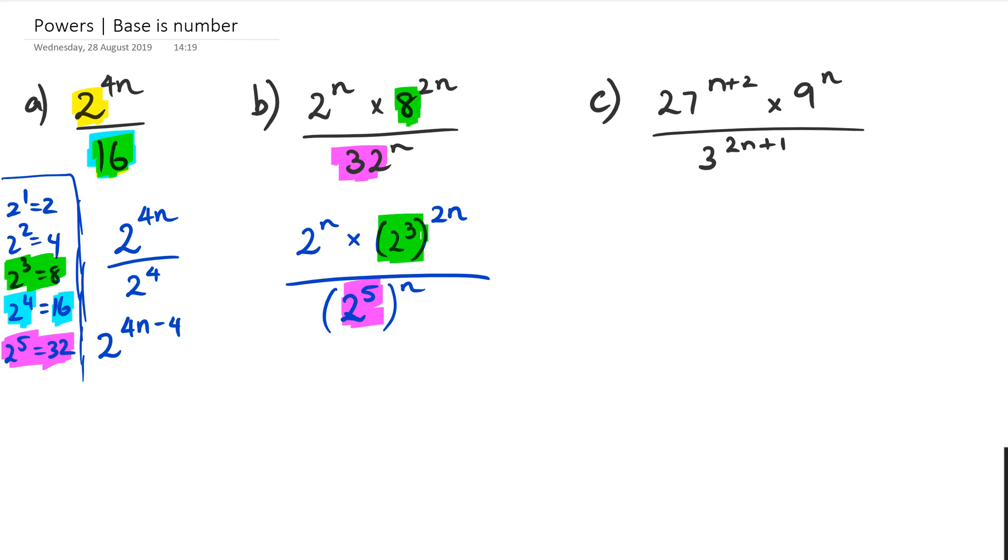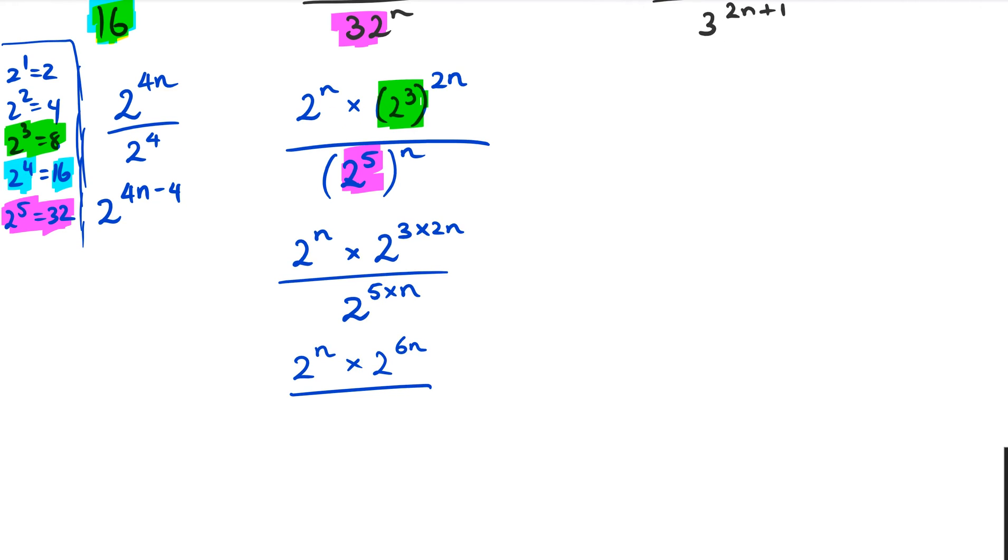So once we have that, then we do our powers of powers. So in other words, I've got 2n, nothing happens to it, multiplied by 2 to the power of, because it's powers of powers, we actually go 3 multiplied by 2n, divided by 2 to the power of 5 multiplied by n, because once again, it's powers of powers. So when we do this, we get 2 to the power of n multiplied by 2 to the power of 6n, and all of that is divided by 2 to the power of 5n.